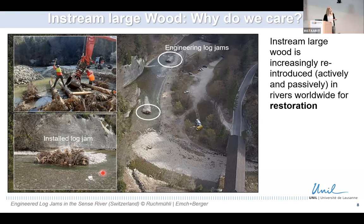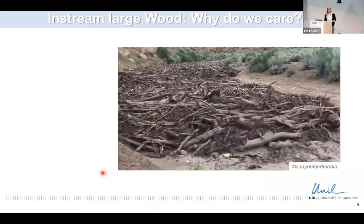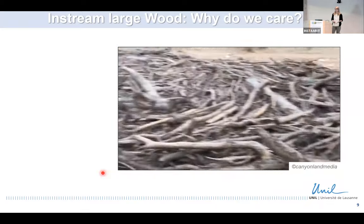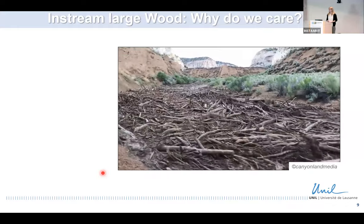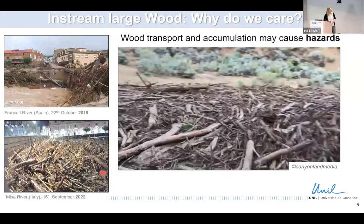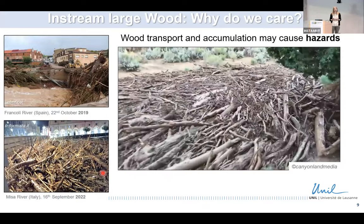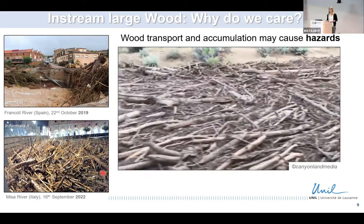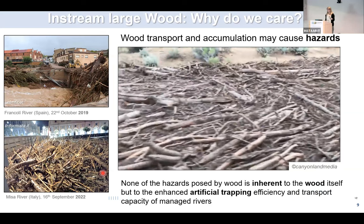Wood is increasingly used for river restoration. But although most of the time wood is stable in river channels, during floods large quantities of wood might be transported — as shown in this example from a river in Utah. Where this wood goes, it might encounter obstacles like bridges or dams and cause hazards. Importantly, none of the hazards posed by wood are inherent to the wood itself. The problem is the infrastructure designed to not allow wood to pass — we are artificially enhancing the trapping efficiency of rivers.